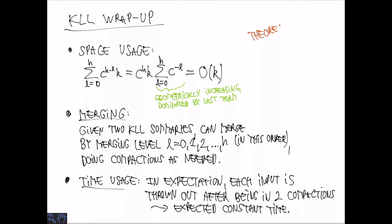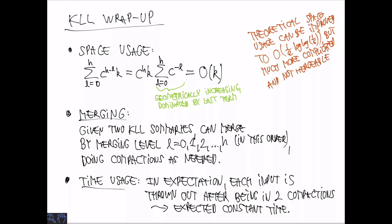From a theoretical point of view, it's possible to slightly improve the space usage of the KLL sketch as we described it. Specifically, it can be improved to be O of 1 over epsilon times log log 1 over epsilon. So very close to the space lower bound 1 over epsilon. However, it's much more complicated and also the sketches are not known to be mergeable. So there's a nice open problem there.